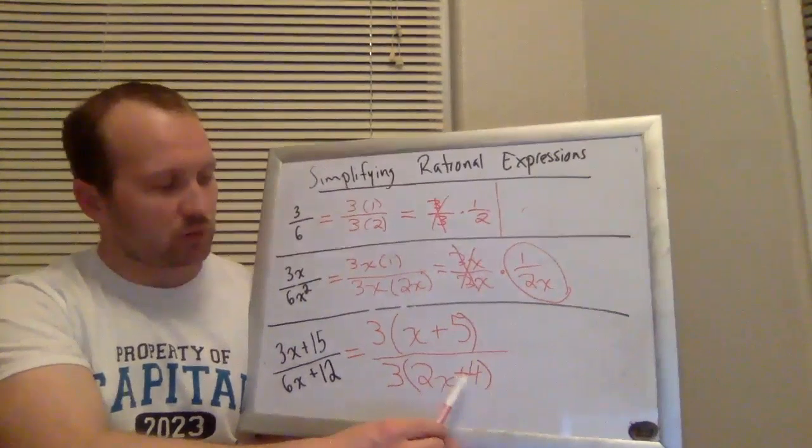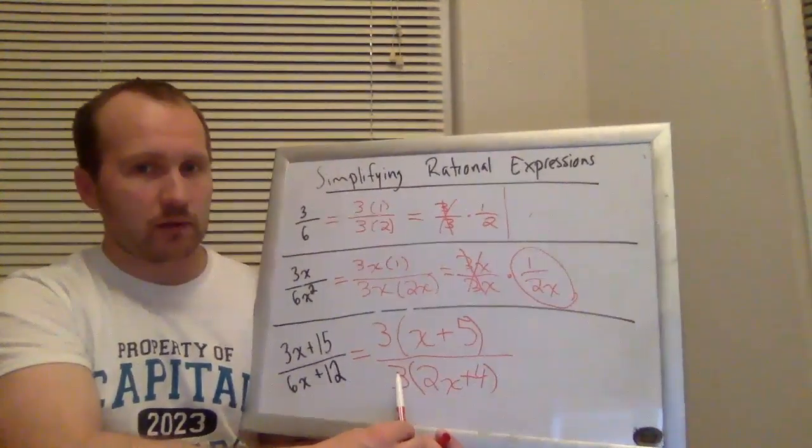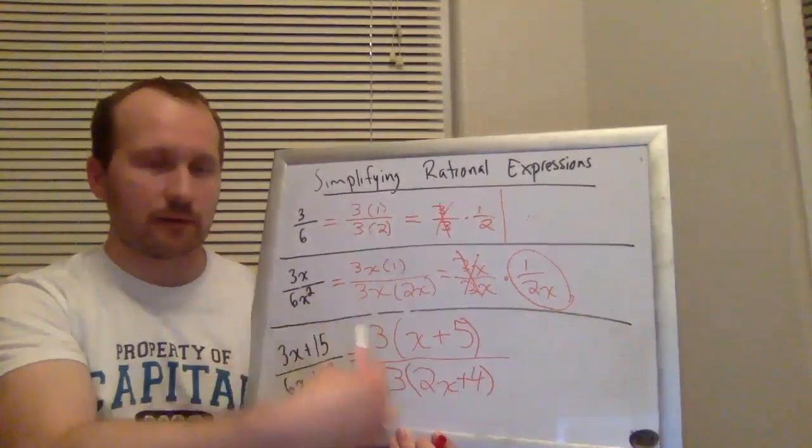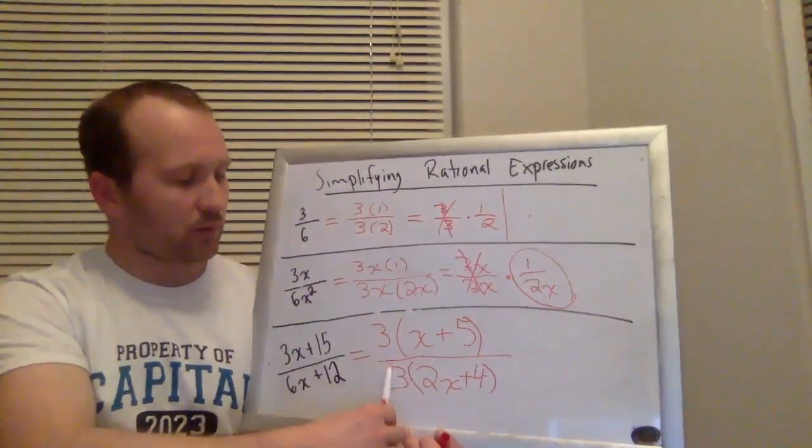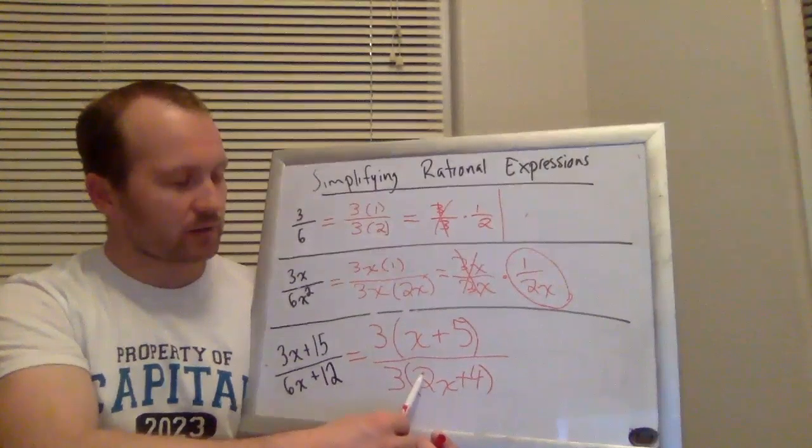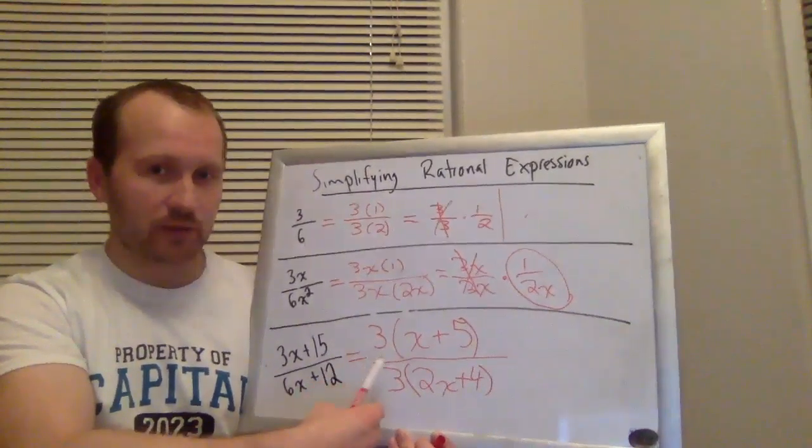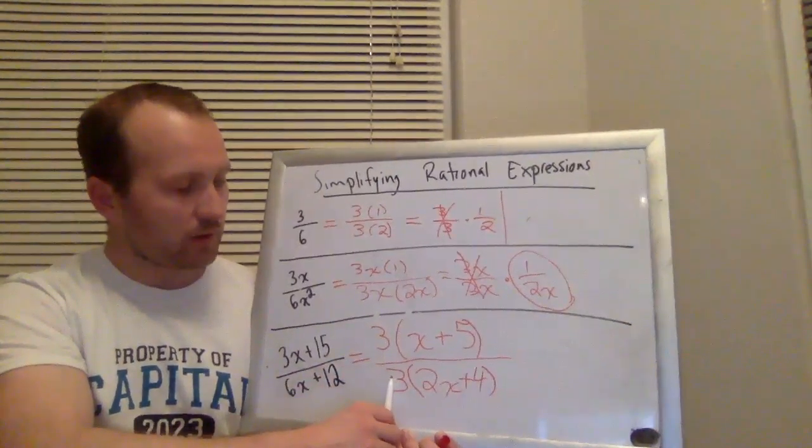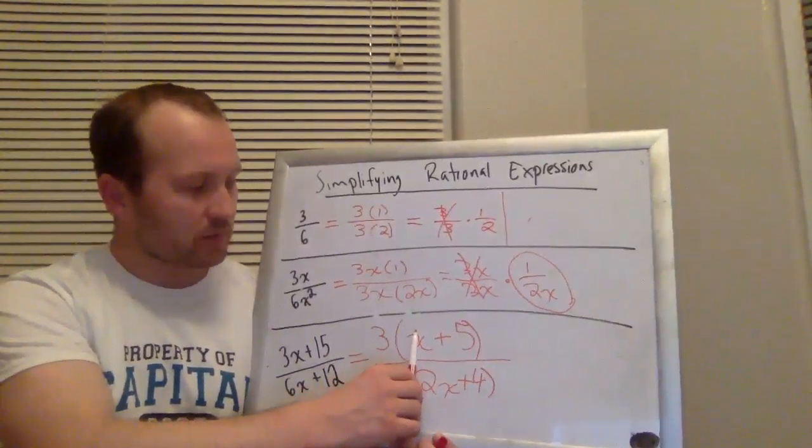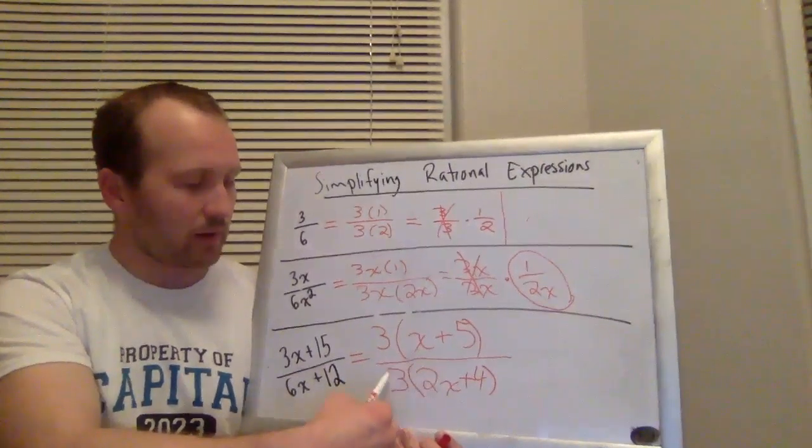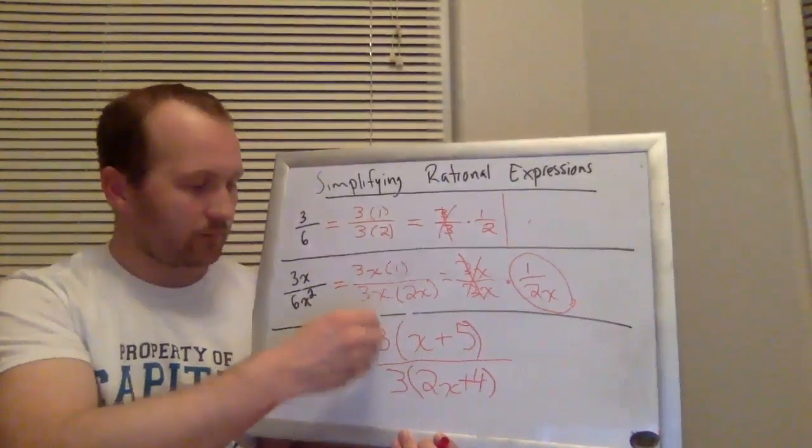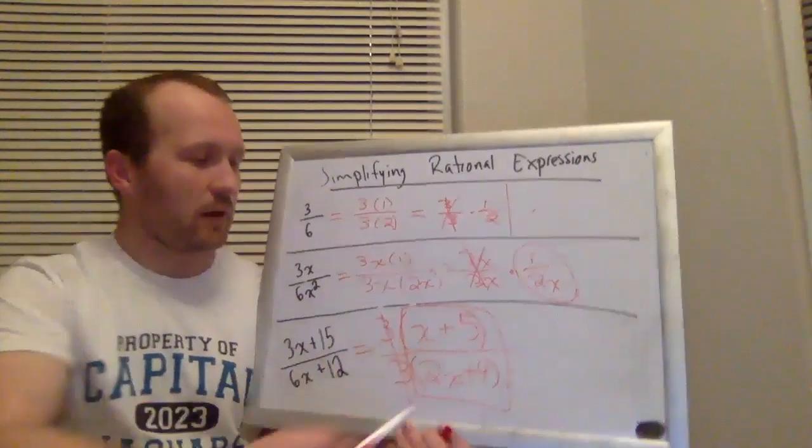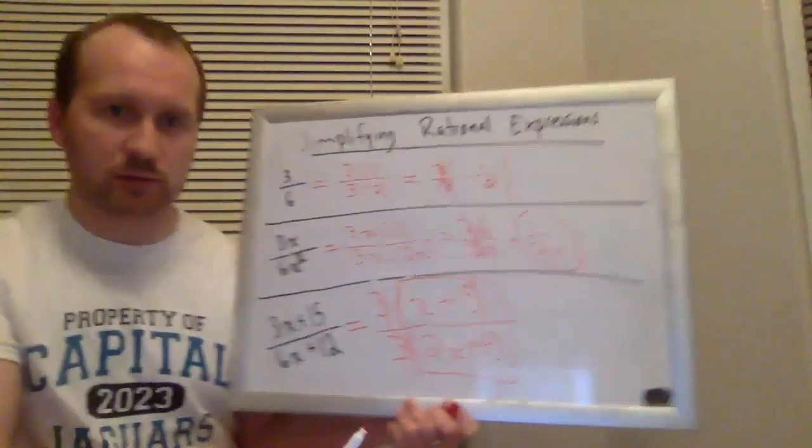Now again, I could have pulled out a 6. And I still would have then seen 3 over 6. And I would have been able to cancel it. But what I'm looking for, as I'm factoring the top and bottom, are common factors, things that are going to cancel. So now 3 over 3, it's 3 times something, 3 times something, that's going to cancel. So this entire expression would just simplify to x plus 5 over 2x plus 4.